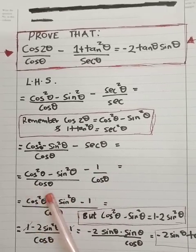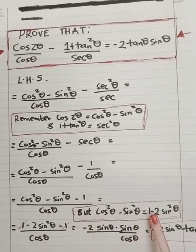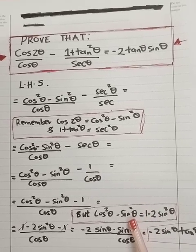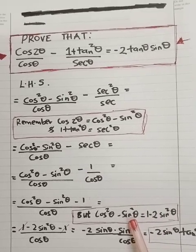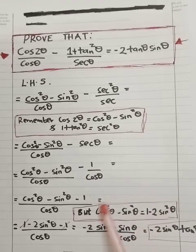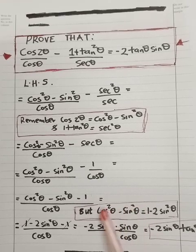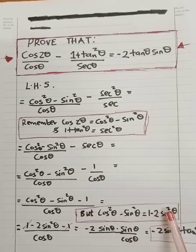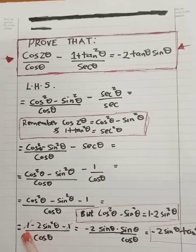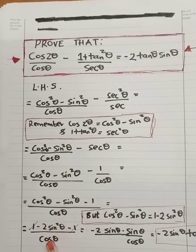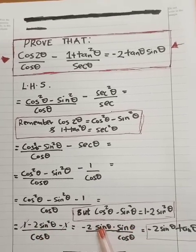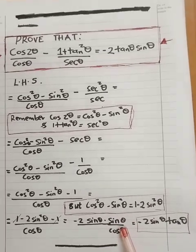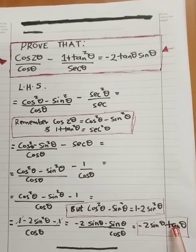Now I'm going to replace cos²θ minus sin²θ with 1 minus 2sin²θ. Please ensure you watch that previous video because I've explained these identities. So if you replace cos²θ minus sin²θ with 1 minus 2sin²θ, you'll get this — the 1 cancels, leaving negative 2sin²θ divided by cosθ. Expanding, sinθ divided by cosθ is basically tanθ.